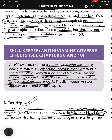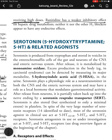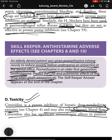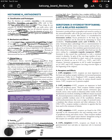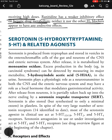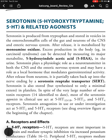For H2 antagonist toxicity: Cimetidine is a potent inhibitor of hepatic drug-metabolizing enzymes and may reduce hepatic blood flow. Cimetidine also has significant antiandrogen effects in patients receiving high doses. A memory aid: 'cimetidine sounds like cement — it cements your liver enzymes and reduces hepatic blood flow.' Ranitidine has a weaker inhibitory effect on hepatic drug metabolism and no significant endocrine effects.